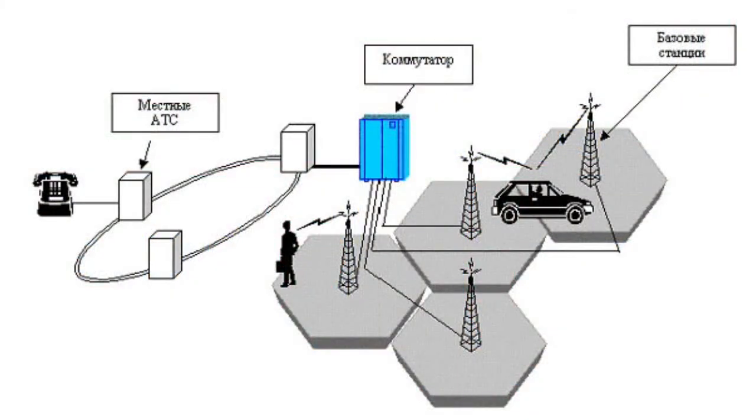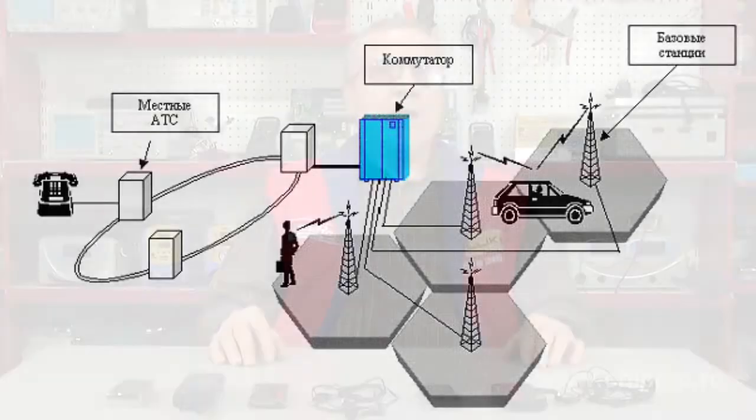The main components of the cellular network are cell phones and base stations. A switched-on cell phone analyzes the air, picking a base station signal. After that, the phone sends the station a unique identification code. The telephone and the station maintain constant radio contact, periodically exchanging packets. This is a short description of a cellular communication principle.